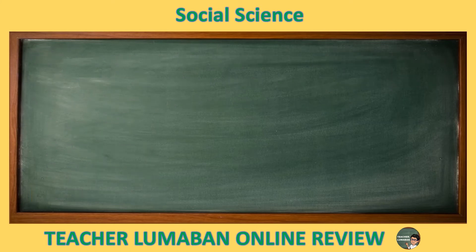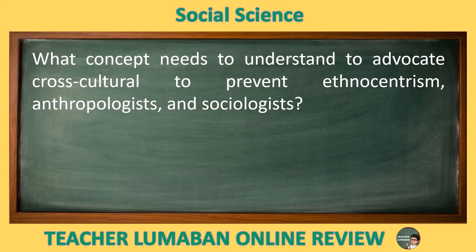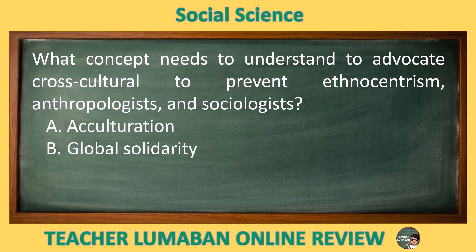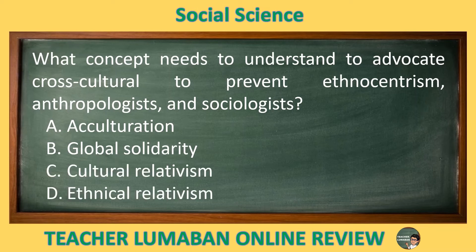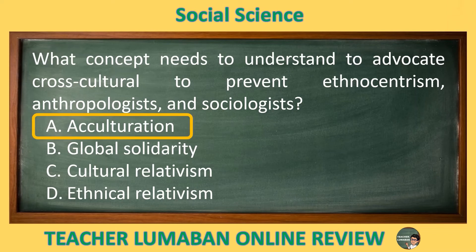What concept needs to be understood to advocate cross-cultural understanding and prevent ethnocentrism among anthropologists and sociologists? Letter A: Acculturation. Letter B: Global Solidarity. Letter C: Cultural Relativism. Letter D: Ethical Relativism. The correct answer is Letter A, Acculturation. To prevent ethnocentrism, anthropologists and sociologists advocate cross-cultural understanding through a concept known as acculturation.